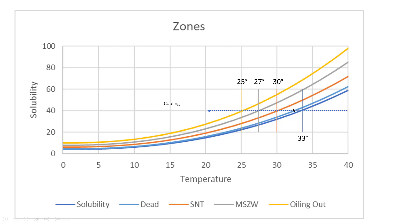If you cool to 30 degrees — below the SNT, the secondary nucleation threshold — then seed crystals you put in can actually generate more seeds and you grow more crystals more quickly. Seeds will not generate more nuclei above the SNT, but they will below it. This is often the zone where people do practical crystallization. When we reach the limit of the MSZW — the metastable zone width — the behavior changes further.